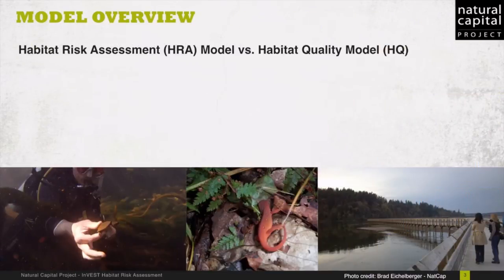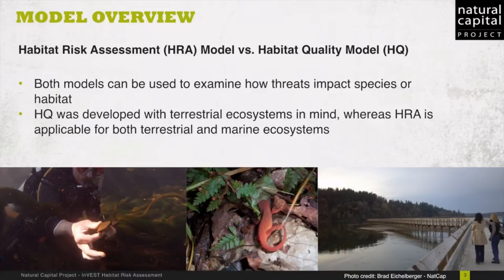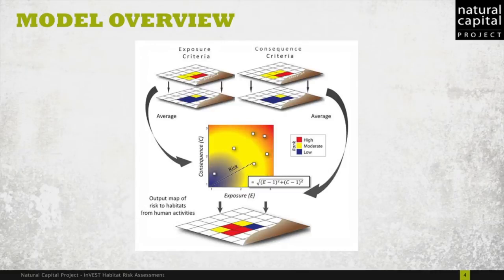It is important to note that both the Habitat Quality Model and the Habitat Risk Assessment Model, also known as HRA, can be used to examine how risk posed by human activities varies across the landscape or seascape and can identify the locations where risk is highest or lowest. The two models are mathematically similar, but different in a few key ways. Habitat Quality was developed with terrestrial ecosystems in mind, whereas HRA is applicable at both marine and terrestrial systems. Habitat Quality is a bit more simplified in the sense that it does not directly include factors such as mortality, recruitment, connectivity, and other exposure criteria, whereas the HRA model does. The Risk Assessment Framework allows the HRA model to be interpreted along exposure and consequence axes in a manner that helps users explore which management strategies are likely to reduce risk.